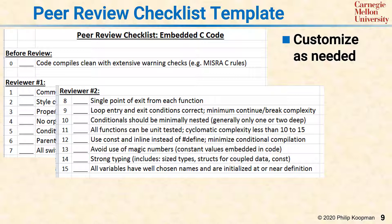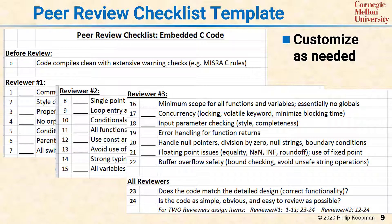At the same time, on the same chunk of code, reviewer number three is asking yet another set of questions. Reviewer number three is looking at whether the variables and functions have the minimum scope and essentially no global variables, whether concurrency issues have been addressed, whether input parameters have been checked, whether error handling works, whether exceptions such as null pointers, division by zero, null strings, and boundary conditions have all been handled properly, whether there are any floating point issues especially with not-a-numbers and infinities, and buffer overflows. All reviewers also think about: does the code match the detailed design, and is the code as simple, obvious, and easy to review as possible?